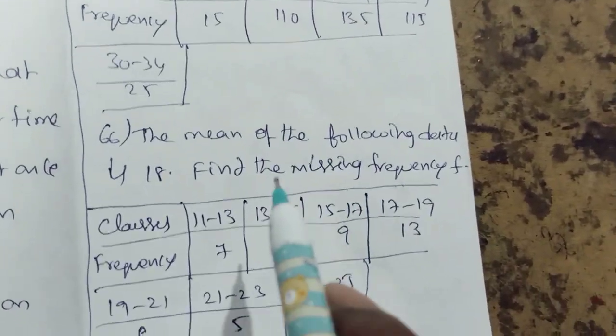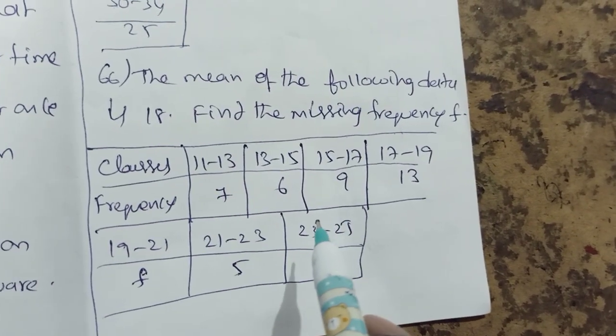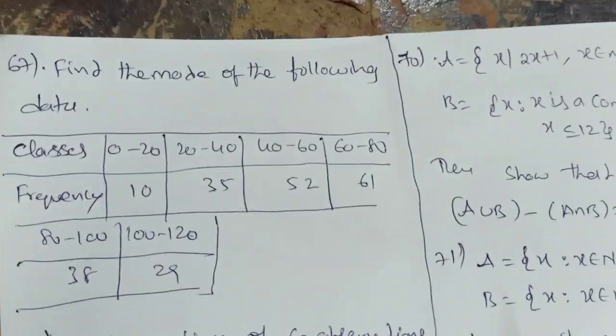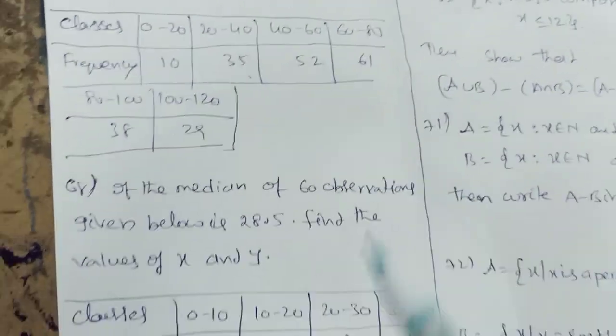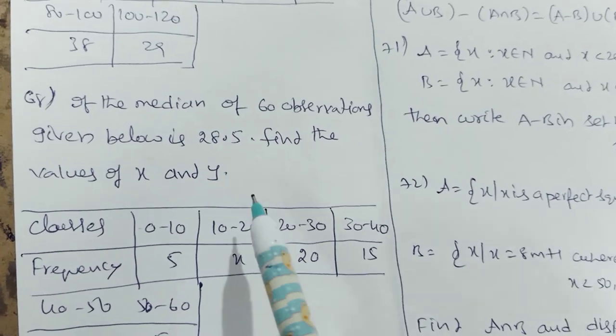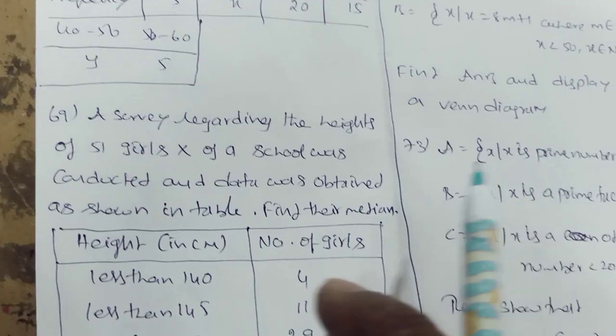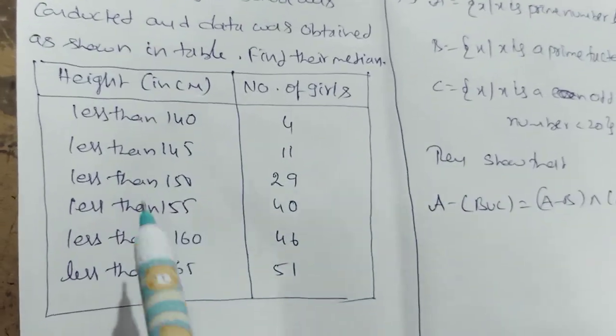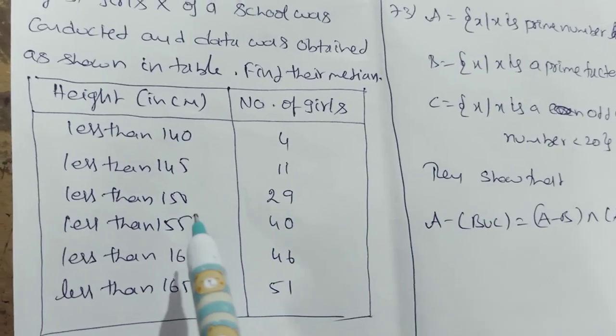Statistics. Find the mean of the following data. One table where the mean is 18, so there is a missing frequency. The second exercise: median is 28.5, find x and y where total frequency is 60. The third question involves classes with frequency less than 40.